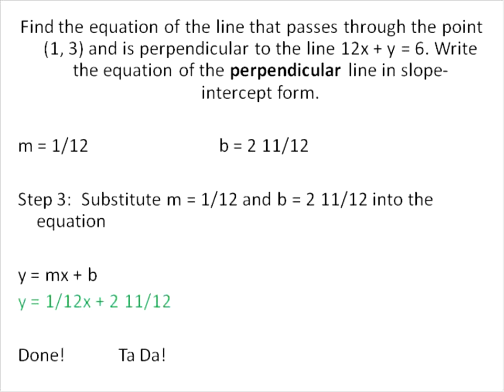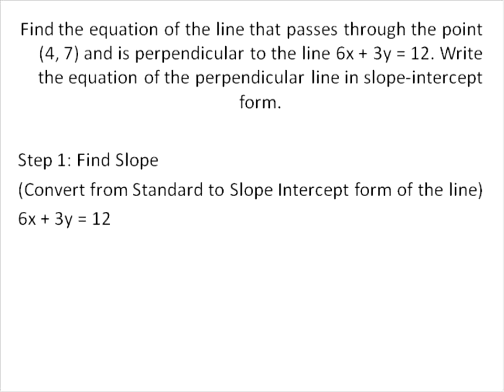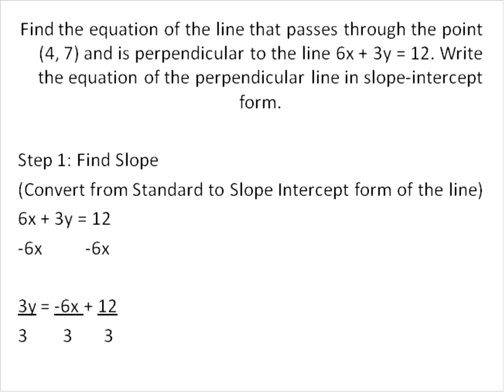You'll notice that these steps are very similar. Here's another example of a perpendicular line. Step one: we're going to find the slope by converting from standard to slope-intercept form. We subtract 6x from both sides of the equation, leaving us with 3y = -6x + 12. We divide by the coefficient of the y value, leaving us with y = -2x + 4.